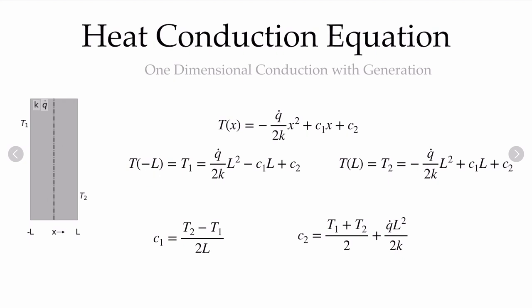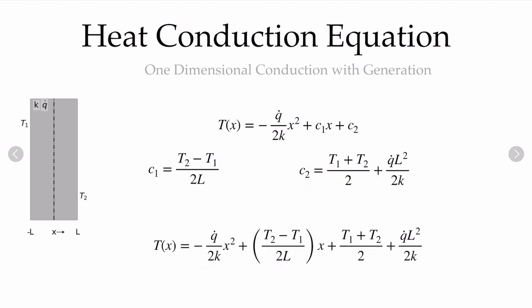Writing that out: the temperature at minus L is T1 and the temperature at L is T2. Subtracting these two relations eliminates C2 and we can solve for C1, then substitute C1 back to evaluate C2. Substituting into the general solution gives the temperature profile through the system — a quadratic variation in x for one-dimensional conduction with constant conductivity and constant thermal generation.